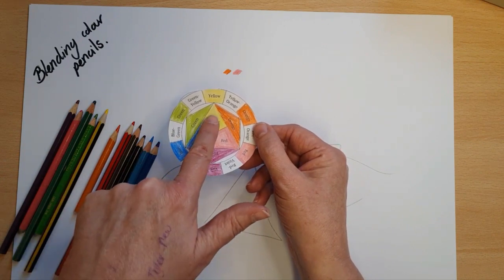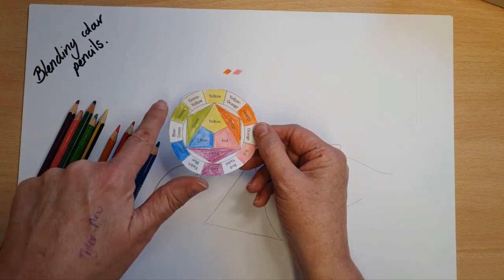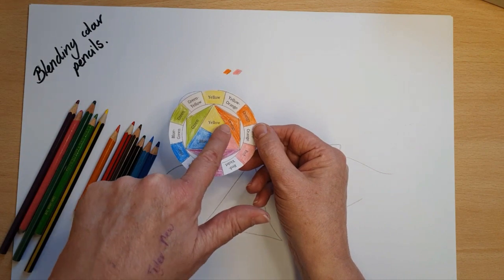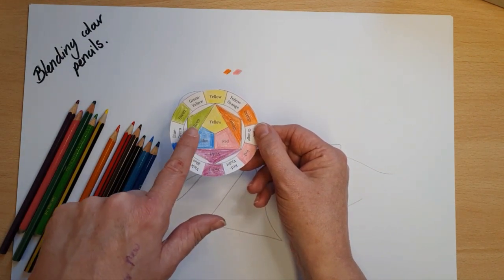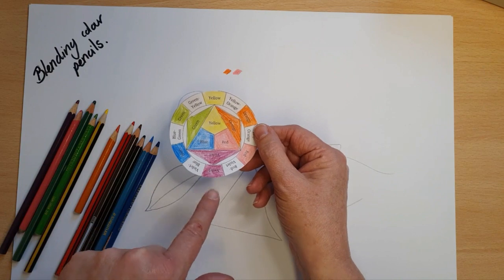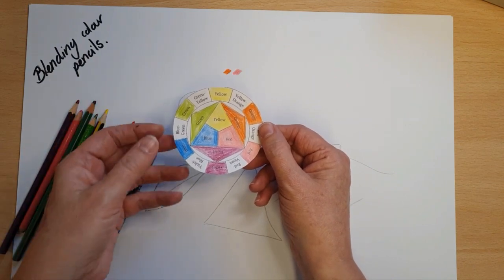Then here I've added in your secondary colors. When I mix blue and yellow together I get green. When I mix yellow and red together I get orange. And when I mix red and blue I get purple. On here they've written violet, just a posh name for purple.